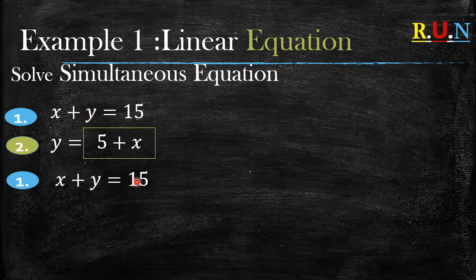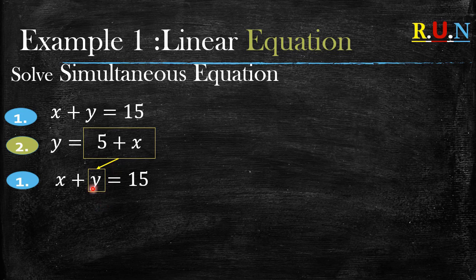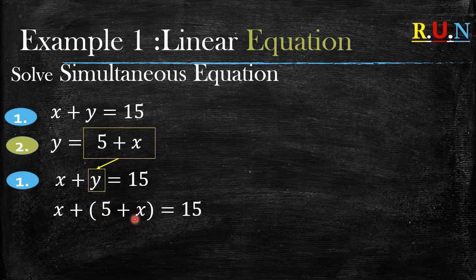In equation number one we have x plus y. Because we are told in equation number two that y equals to five plus x, wherever we see a y in equation number one we can substitute the five plus x. Always remember, when you substitute your five plus x into the other equation, always put them into brackets.